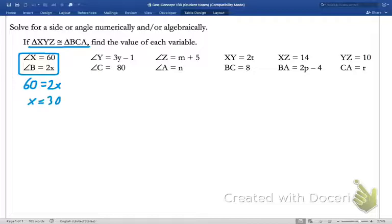Now, I also noticed that this angle Y is in the middle and angle C is in the middle. I know that 3Y minus 1 is going to equal 80. So, let me add 1 to both sides and divide by 3. In your head, you got it. 27.